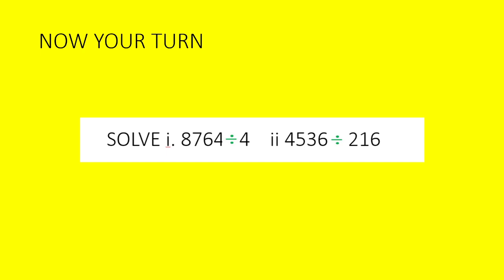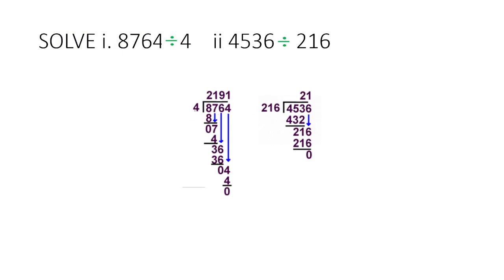I think all of you have done correctly. Let's check the answer. Yes, you all are correct. 8764 divided by 4, your quotient is 2191, remainder is 0, and divisor is 4. Same like that, this is your first part, here this one is your second part. Here your quotient is 21 and remainder is 0.